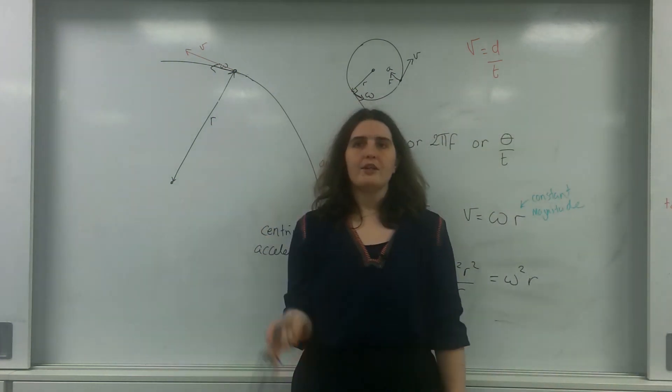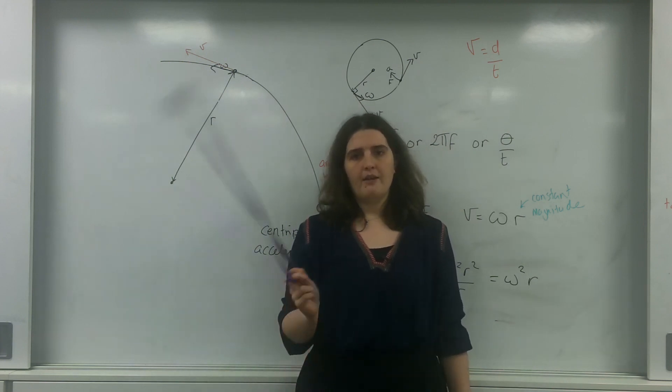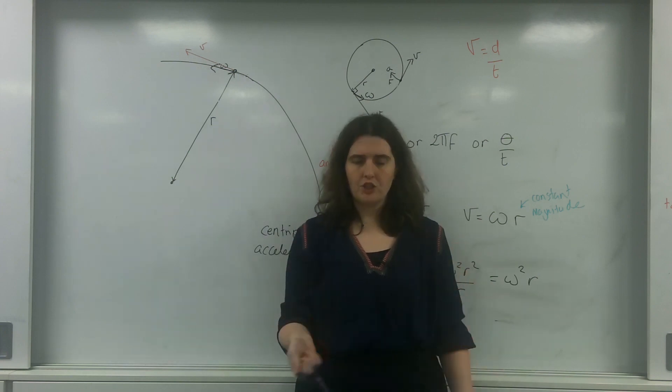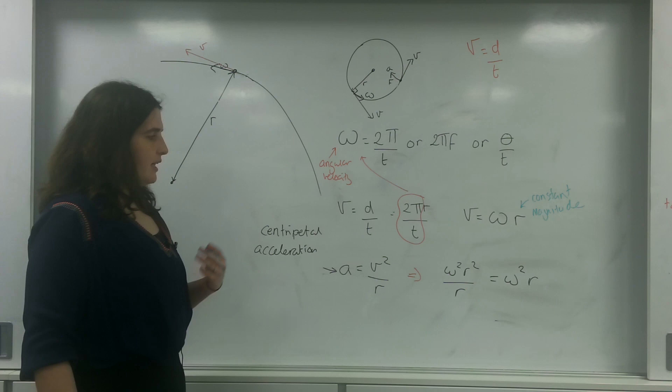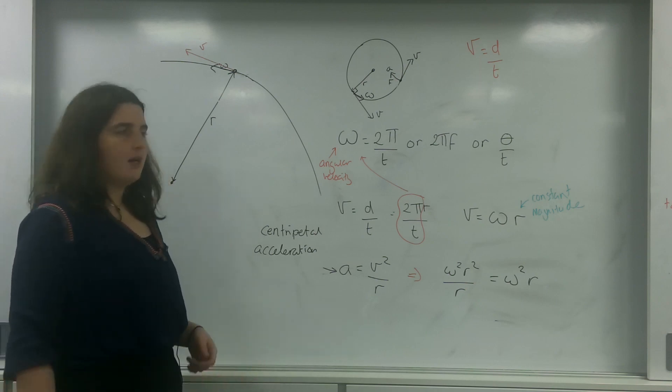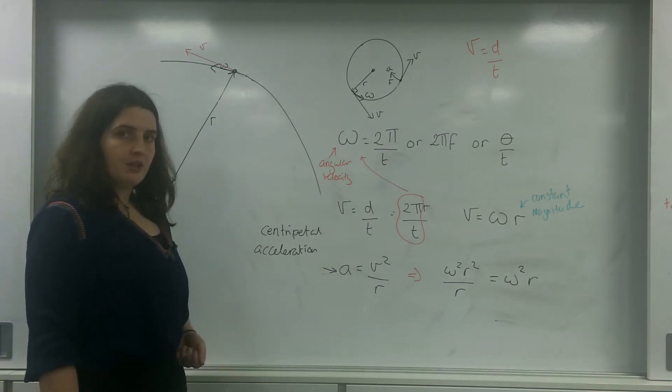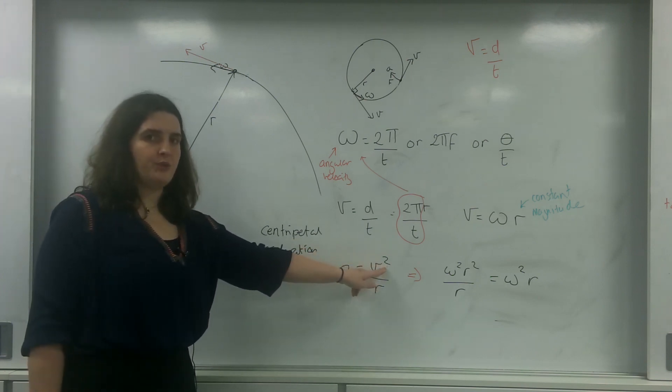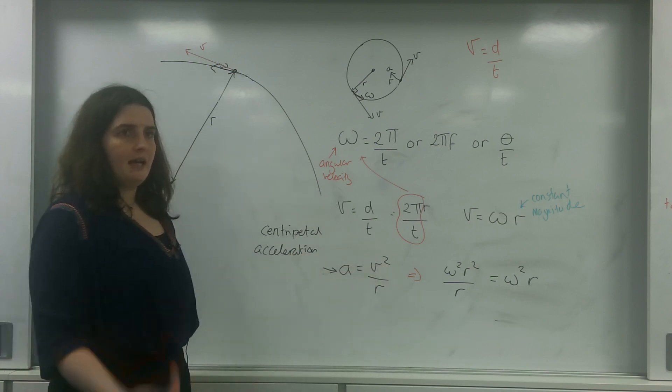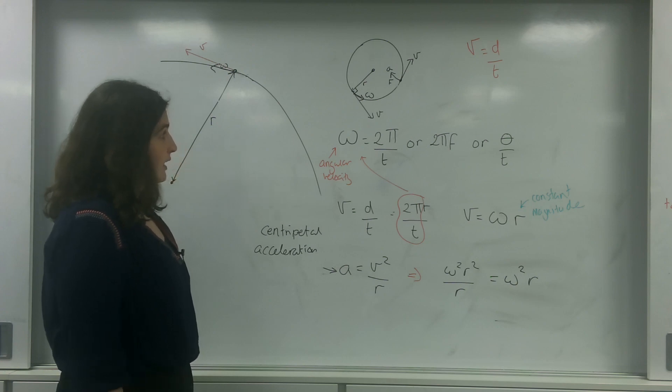So, wherever I took it around this circle, the velocity would be the same. The speed, the magnitude of this velocity would be the same. The direction would be different, but the magnitude would be constant. Centripetal acceleration, again, would also be constant around the circle, because without a constant a, you would not get a constant v. So, centripetal force is constant around the circle, as well as centripetal acceleration.